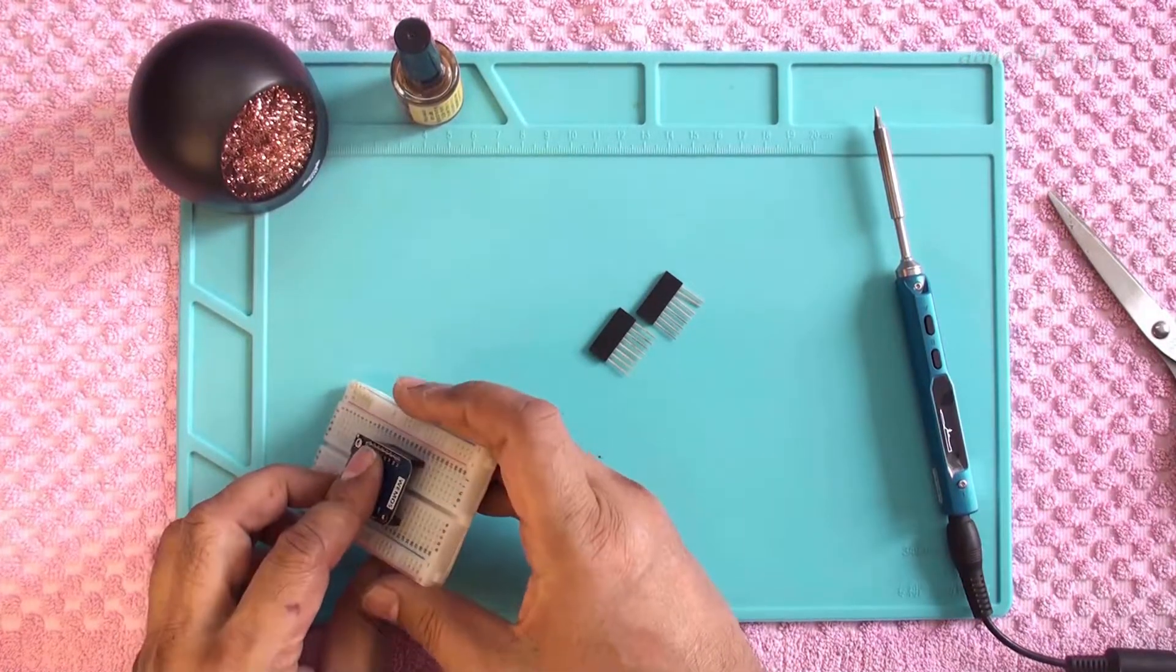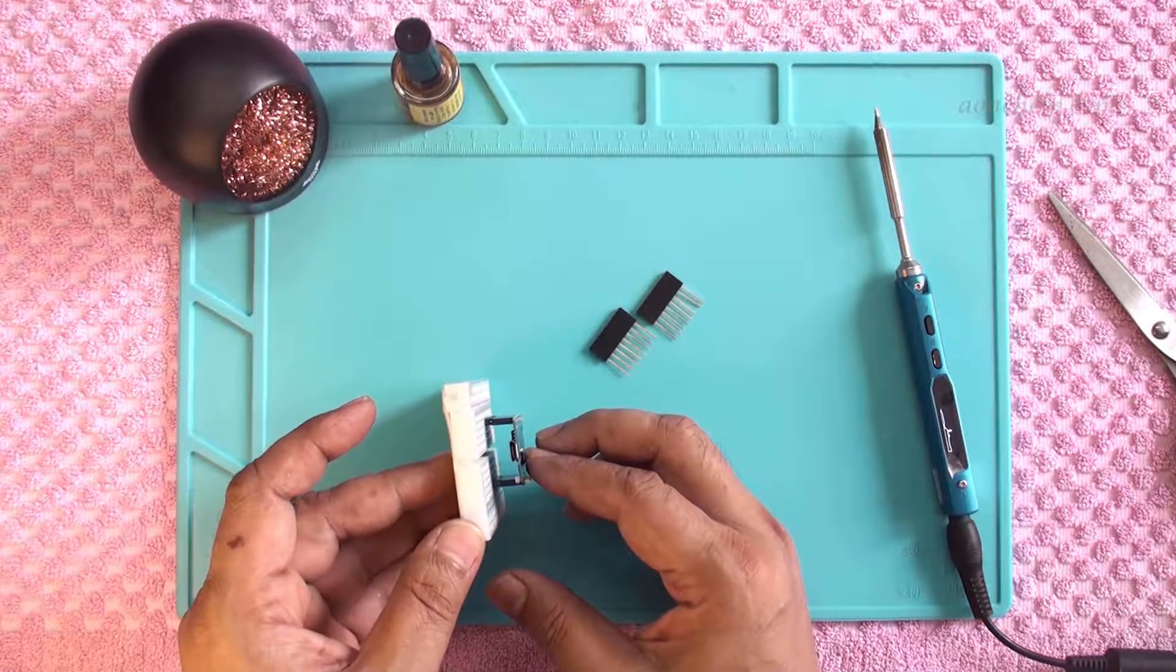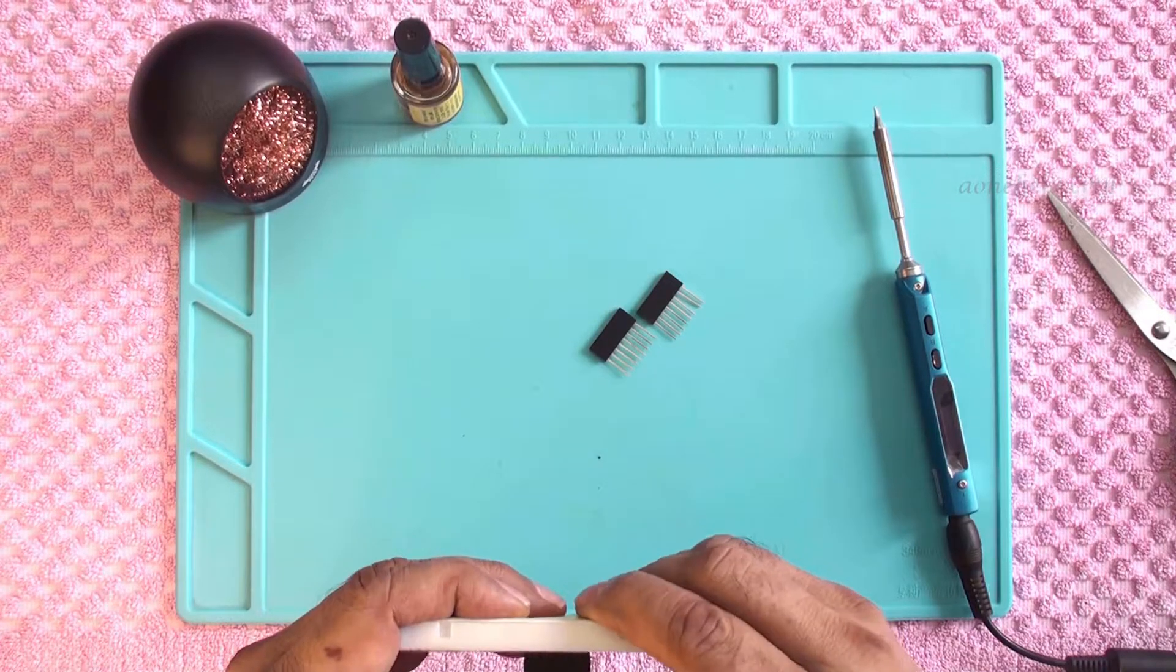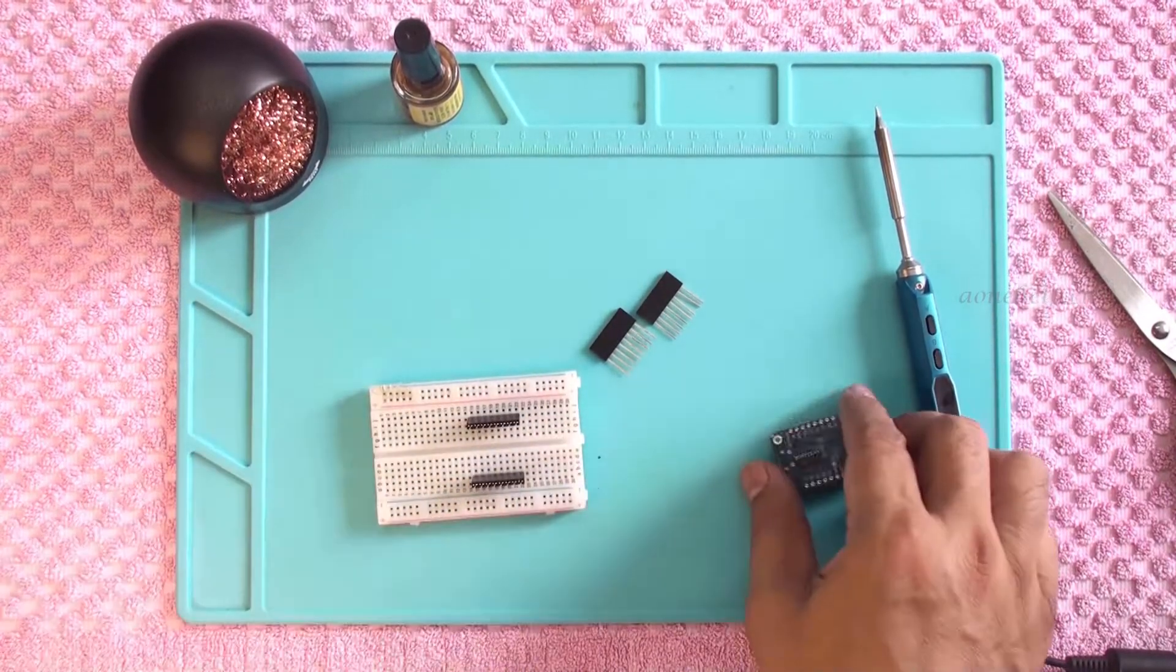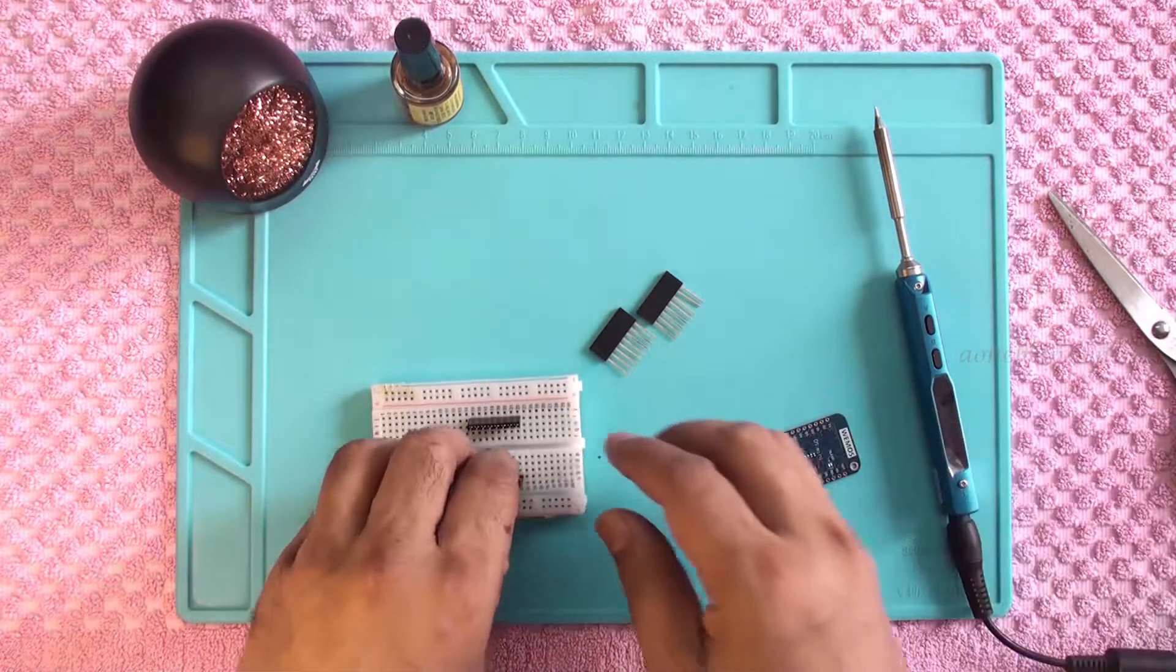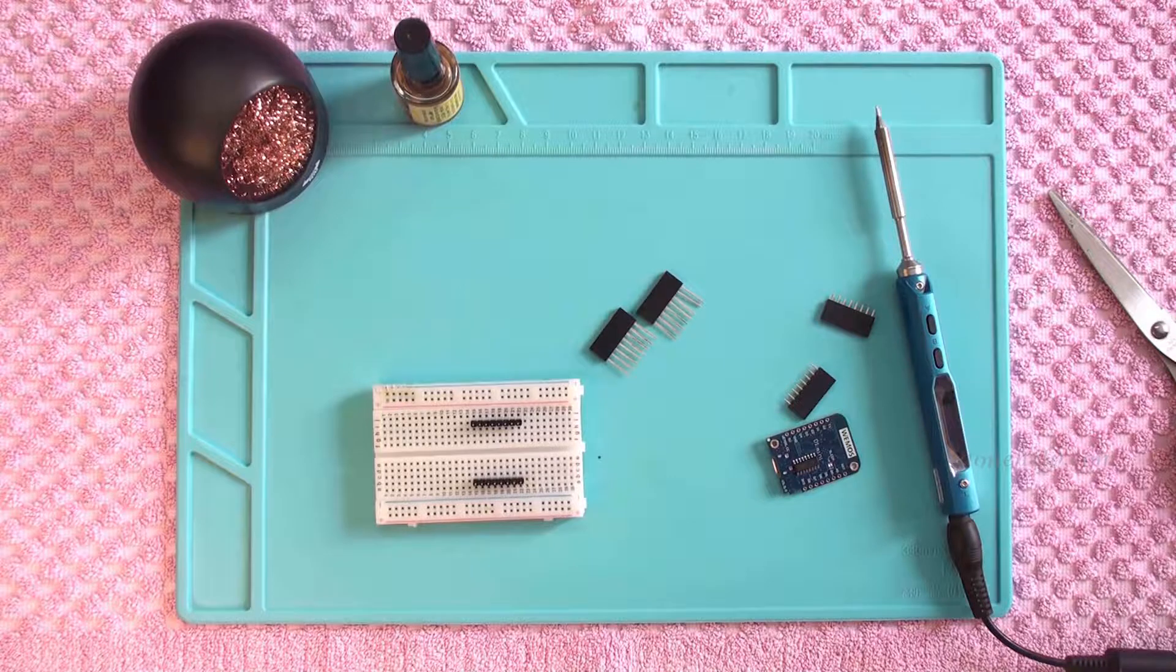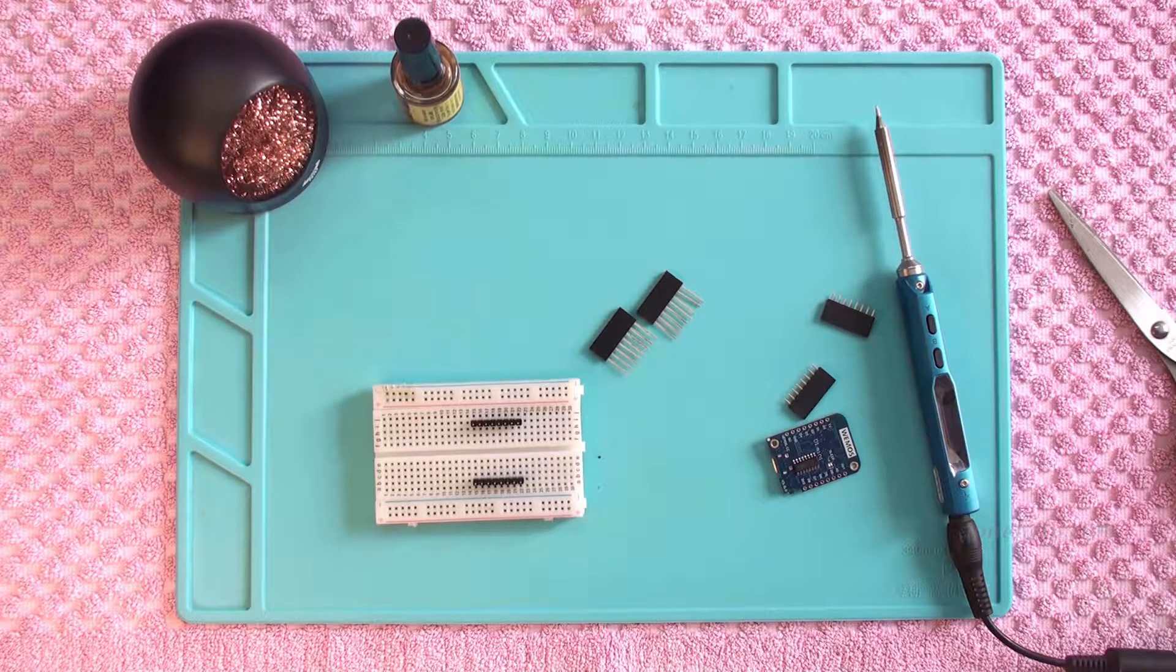Generally, female headers with small pins are used when we want to put a shield on the module or we want to use dupont wires for connection during prototyping. Once small pin headers are soldered, we cannot insert this module on a breadboard. If we want to insert a module with female headers on a breadboard or want to fix the module on another set of female headers, we should use female headers with long pins.